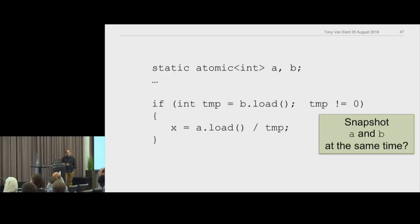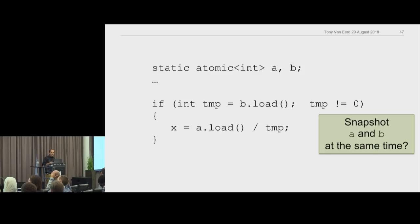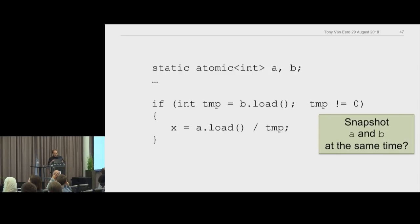If you needed to get a snapshot of A and B at the same time — you basically can't. You could put A and B in a structure and get a snapshot of the pointer, but in lock-free programming you can only read one variable at a time. The other option is to smash A and B together into a small enough struct that it can be atomic — cram it into 32-bit or 64-bit ints. But if A and B are far apart, you can't read them at the same time.